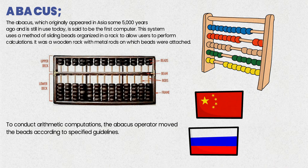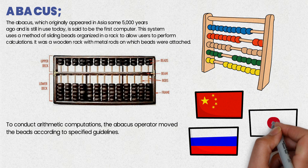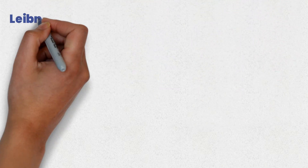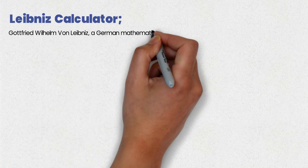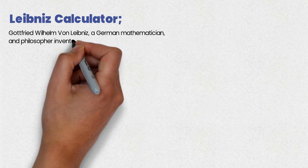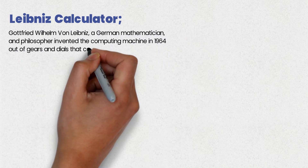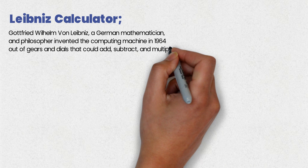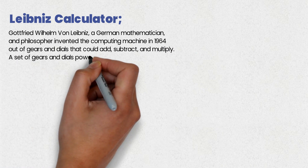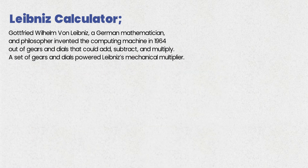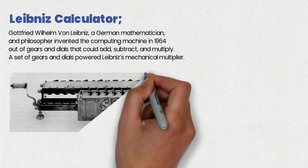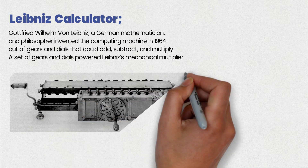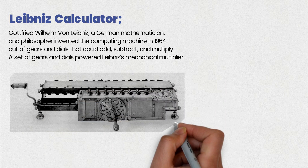Leibniz calculator: Gottfried Wilhelm von Leibniz, a German mathematician and philosopher, invented the computing machine in 1694 out of gears and dials that could add, subtract, and multiply. A set of gears and dials powered Leibniz's mechanical multiplier.